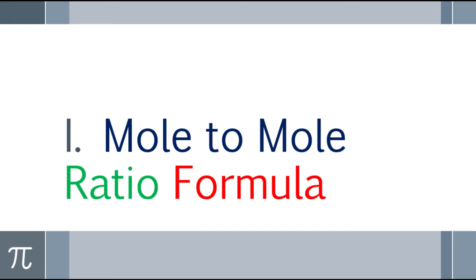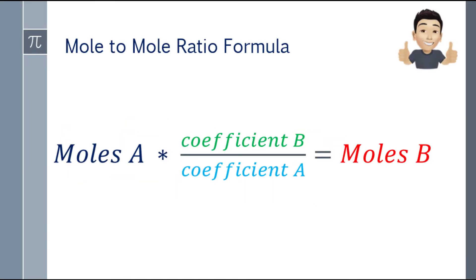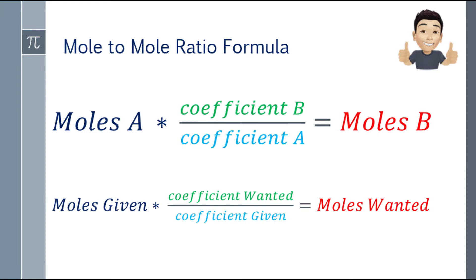Let's start with the lesson proper, Chapter 1: mole-to-mole ratio formula. We have the formula: moles A times coefficient B over coefficient A equals moles B. Or it can be expressed as moles given times coefficient of wanted over coefficient of given equals moles wanted.